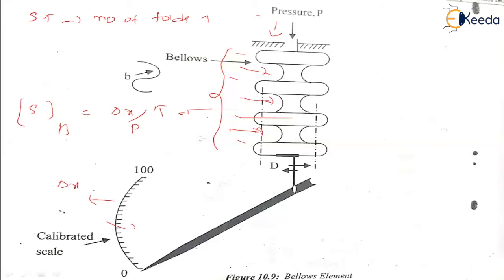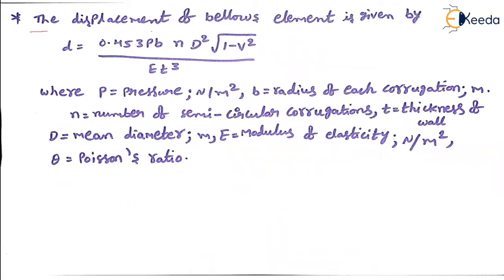Here the thickness of the wall is t, d is the mean diameter, and b is the radius of each corrugation — these folds are also called corrugations. p is the applied pressure. The displacement formula for the bellow element is: δ = 0.453 × p × b² × n × d × (1 − v²) / (E × t³), where n is the number of folds, v is Poisson's ratio, and E is the modulus of elasticity.